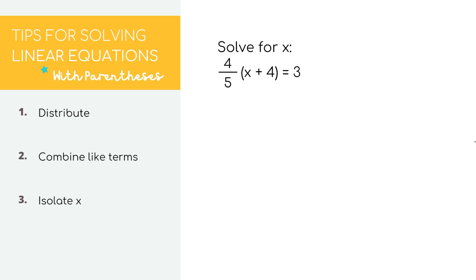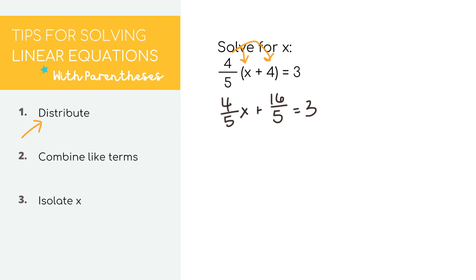Here's another one with fractions — we'll do the same thing. Step 1: distribute to get rid of the parentheses. The number directly outside is 4 fifths. Multiply it by x to get 4 over 5x, then multiply 4 fifths by 4 to get 16 over 5. Bring down the 3. Since the denominator of both fractions is 5, let's multiply both sides of the equation by 5.